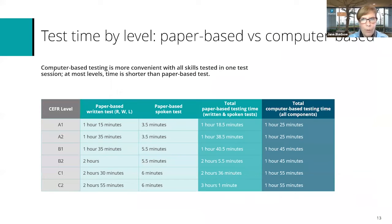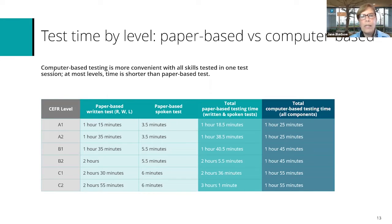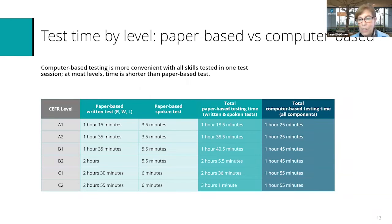The other thing that's different between paper and computer is the length of the test. The item number is about the same between paper and computer, but the computer-based test is shorter — it's all under two hours. Particularly at B2, C1, and C2 level, the paper-based test takes about two and a half to three hours, but the computer-based variant at those levels is under two hours — much quicker. That allows a little more flexibility for the candidate who is time-starved and wants to get this done as quickly as possible.